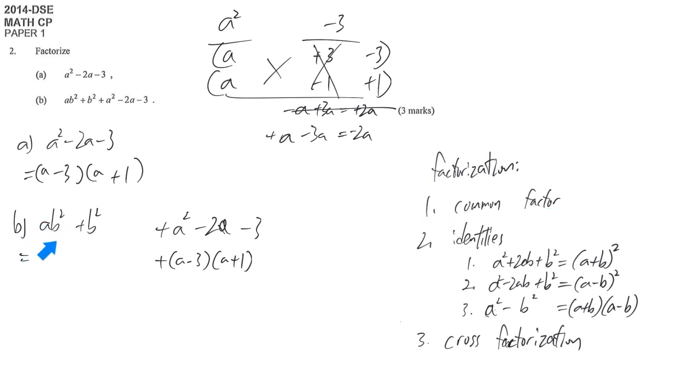And then the second part we just look at this. Is there any common factor? We have common factor b². So we extract b² and then we have to write down what is left vertically below. First term, take out b², only a is left.